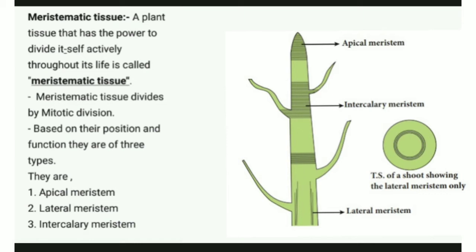Based on their position and function, meristematic tissues are of three types: apical meristem, lateral meristem, and intercalary meristem.